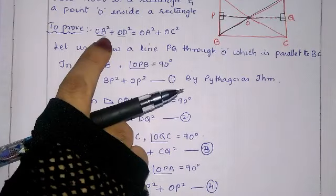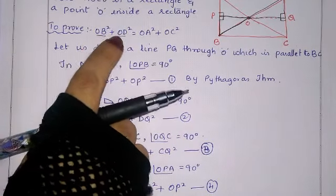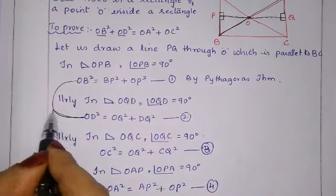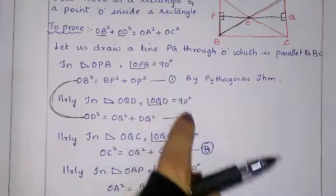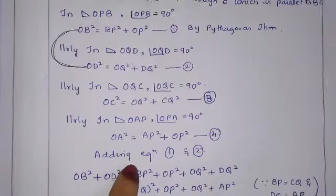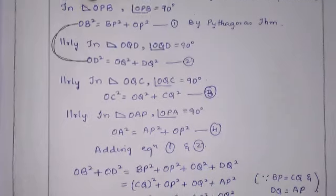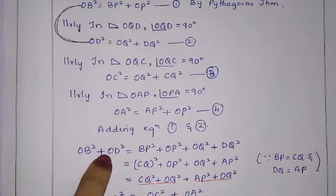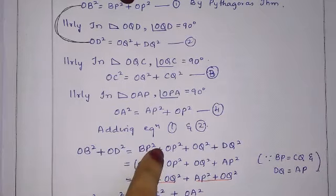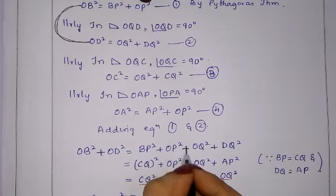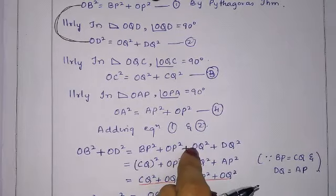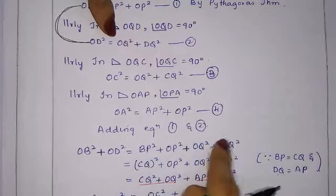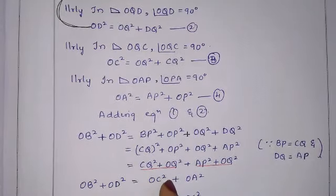Adding equations 1 and 2: OB² + OD² = PB² + OP² + OQ² + DQ². Since BP = CQ (opposite sides of the rectangle) and DQ = AP, we substitute these equal values.